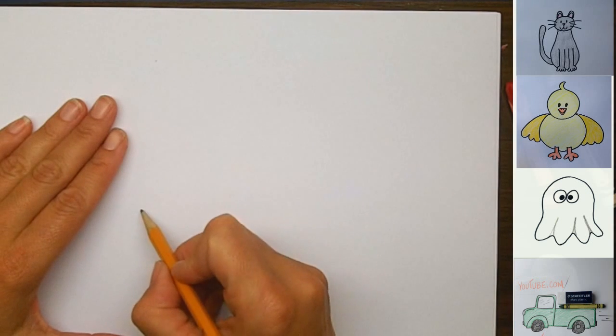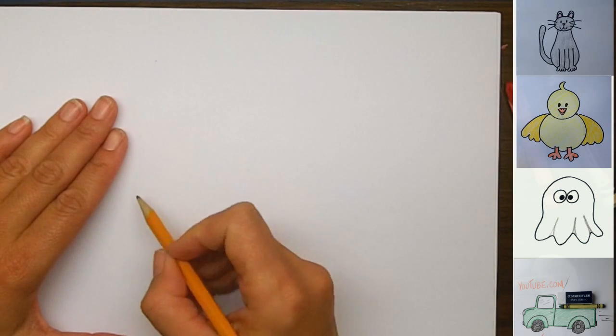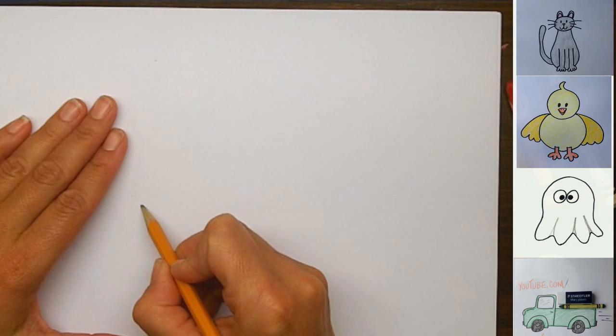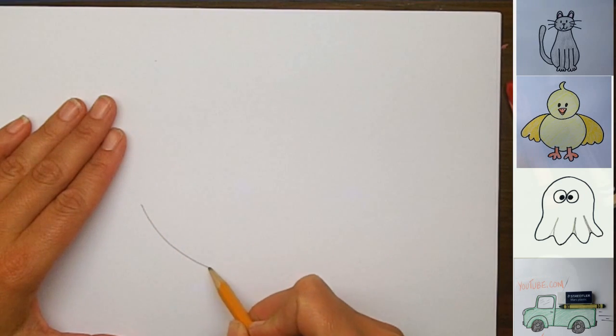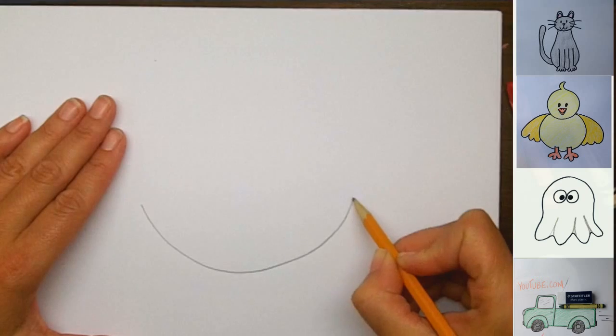We're going to start off by drawing the shell that he's hatching out of. So I'm just going to draw a C-shape at the bottom, just like that.